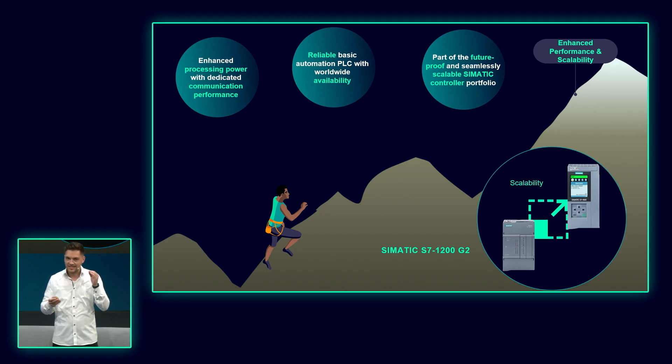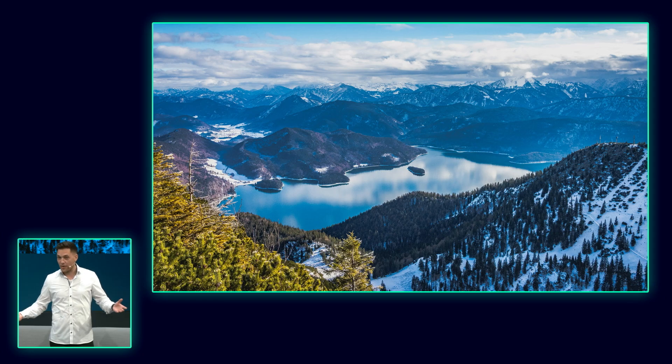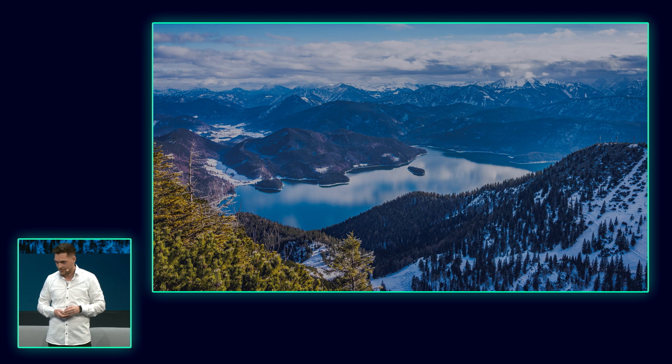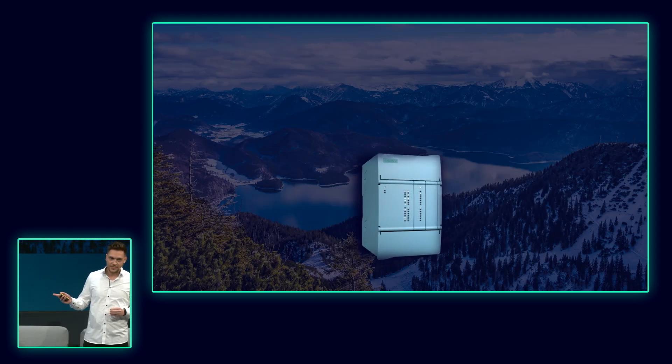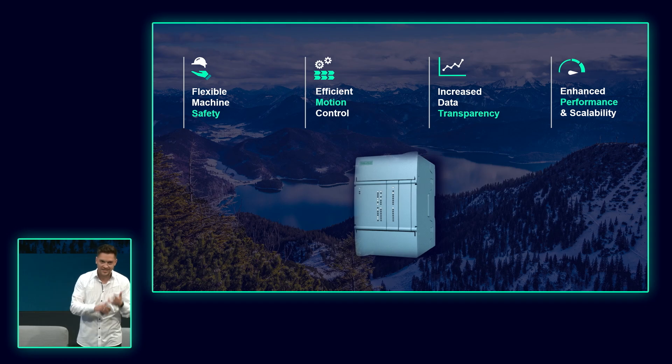And it is adaptable. This is part of our future-proof and seamlessly scalable SIMATIC controller portfolio. As said, in case you reach performance limits, you can simply take your program, put it into a higher class CPU like the S7-1500, you can stick to your motion concept, you can stick to your safety concept and you're ready to go. And with that, we are on top of the mountain and we can now enjoy the great mountain view. So being on top feels great, right? It's always a nice reward for the hard work. But staying on top is much harder. That's what you can achieve with SIMATIC S7-1200 G2. Make your machines ready for the future of basic automation. Rely on this new controller generation with flexible machine safety, efficient motion control, increased data transparency, and enhanced performance and scalability.